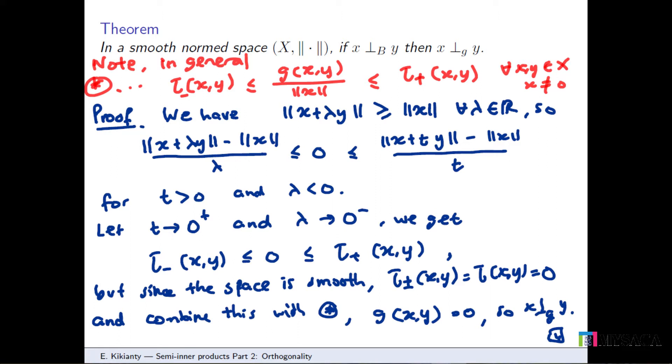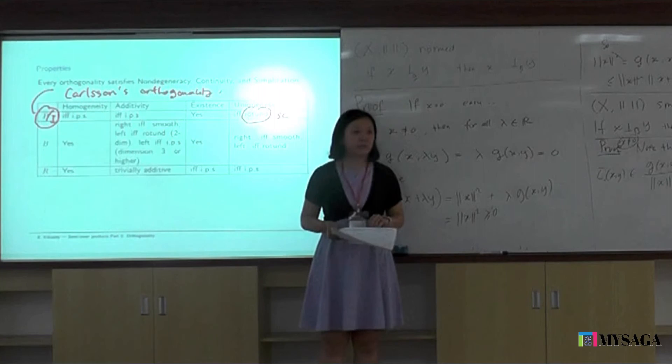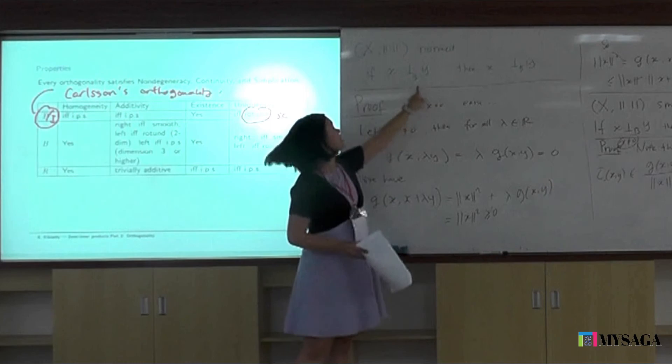So the relationship becomes 'if and only if' in a smooth space — quite interesting. Please remember these two results for tomorrow, because I will need them for my Riesz representation theorem. It's quite impossible to remember everything, but at least remember these two: Birkhoff implies G-orthogonality in smooth spaces, and the relationship between them.